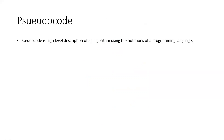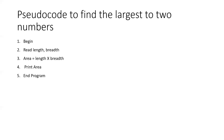So pseudocode is a high-level description of an algorithm using the notations of a programming language. In pseudocode, we use both natural language (English) as well as notations from programming languages. It is a mix of natural language and programming language — it is not actual code written in a programming language, but we take some notation from the programming language to write the algorithm. That makes it pseudocode.